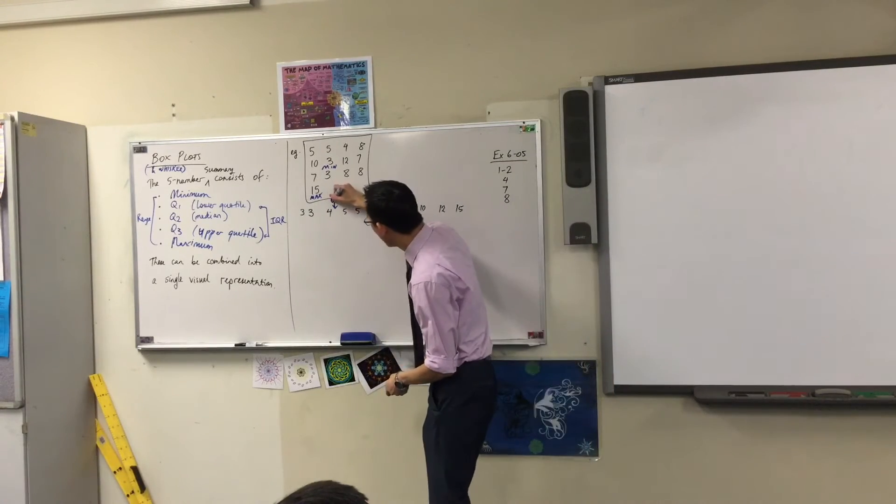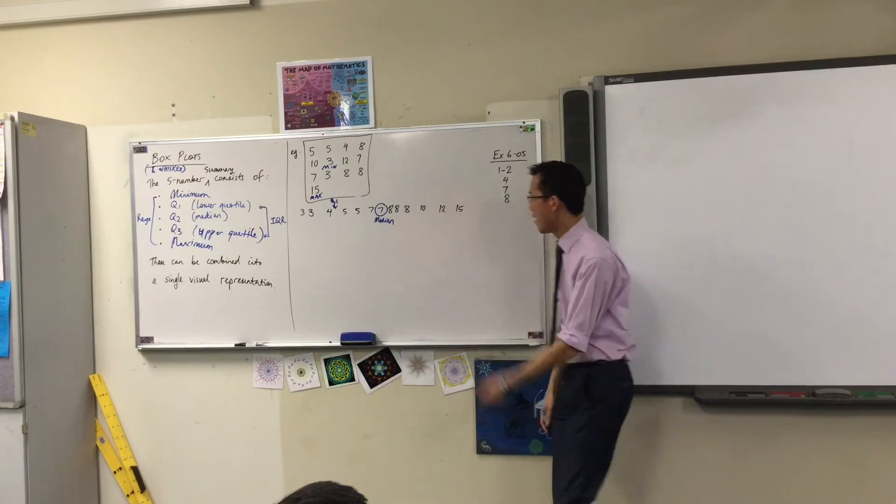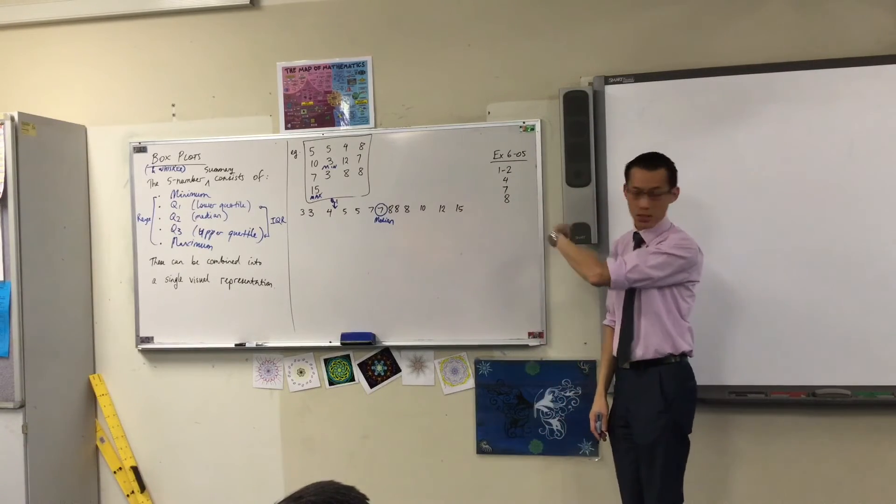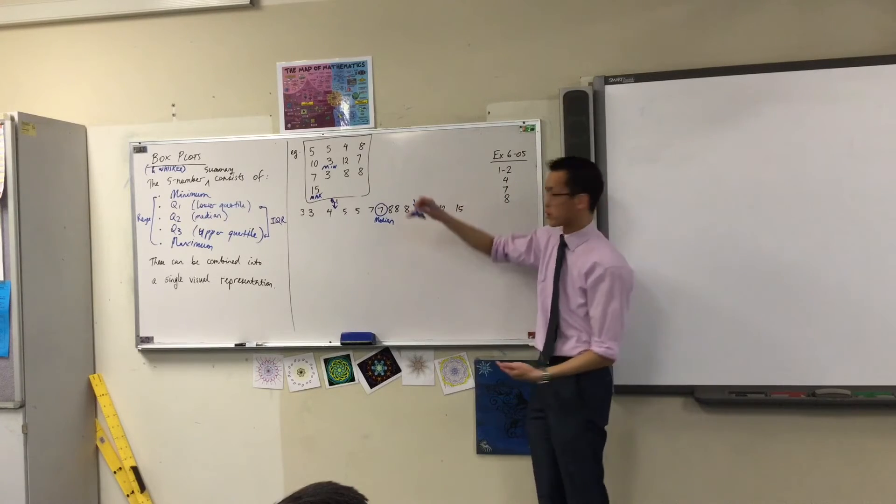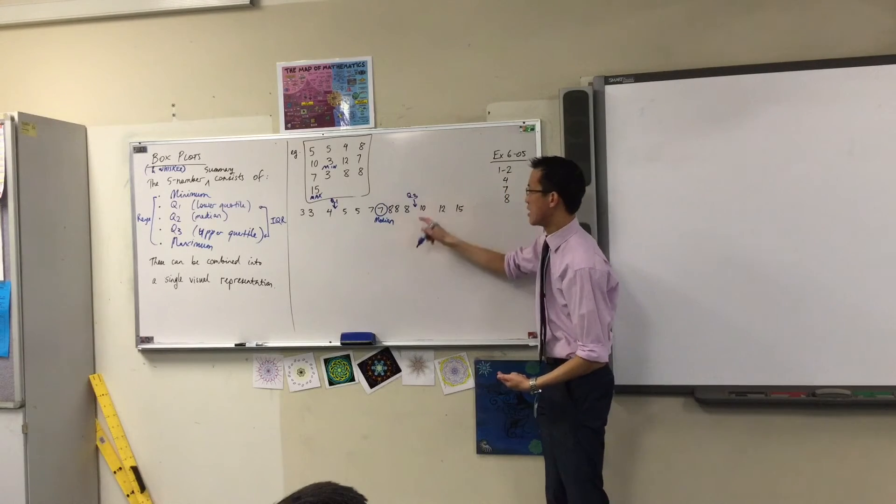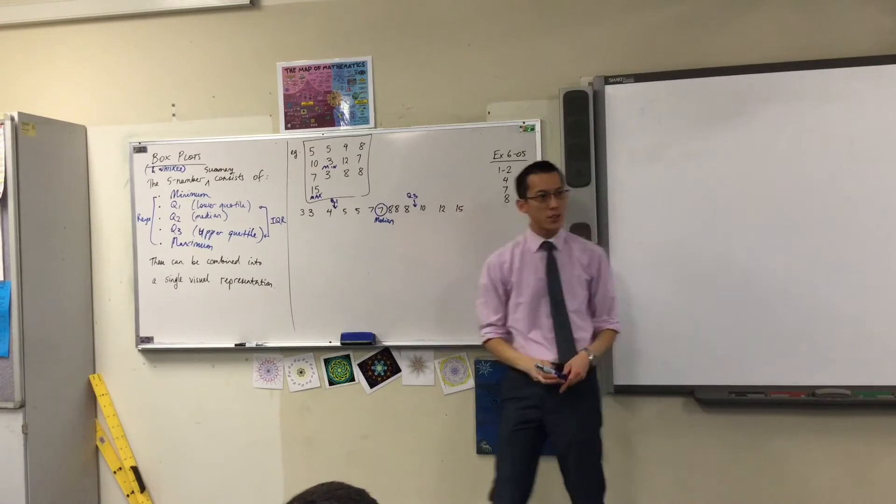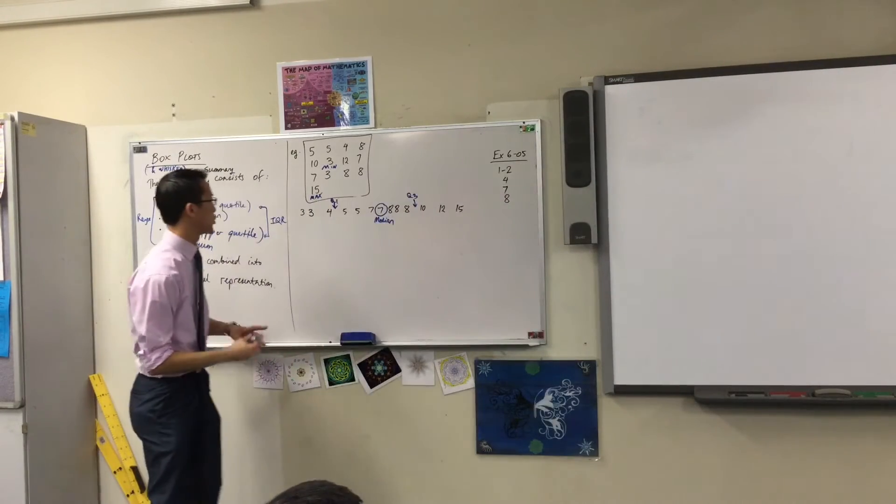So therefore, Q1 is going to be 4 and a half, and you can make the opposite sort of illustration over here. Here's the upper quartile, Q3, and it's going to be 9. Great. So now I know what my five numbers will be.